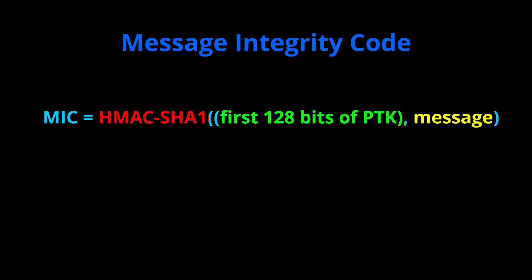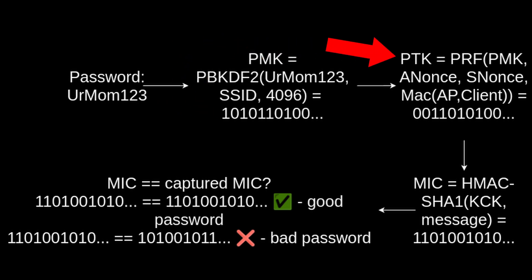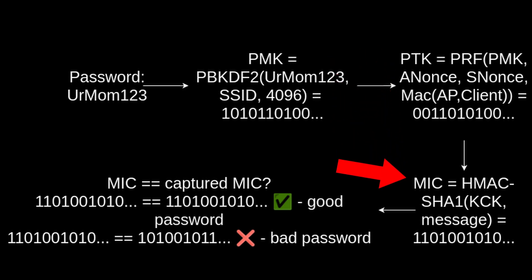Also, the Message Integrity Code, which I talked about earlier, is just a hash of the message with the first 128 bits of the PTK. All of this is really important to us because for each password we want to try when brute forcing, we can calculate the PMK, then the PTK using the captured data, and finally the MIC using the captured message and part of the PTK. And if the captured MIC and the one we just calculated are the same, we know that we have the correct password.